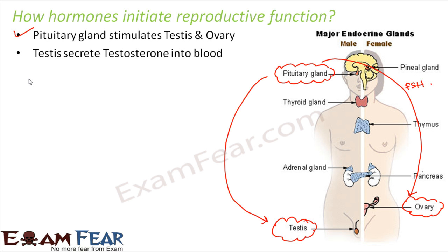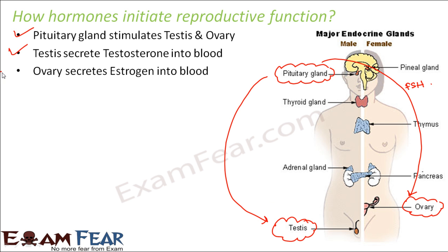The testis will secrete testosterone into the blood, because these are endocrine glands that directly release their secretions into the blood. Similarly, the ovary will secrete estrogen, which is also released into the blood. In a male there will be more testosterone, and in a female there will be estrogen.